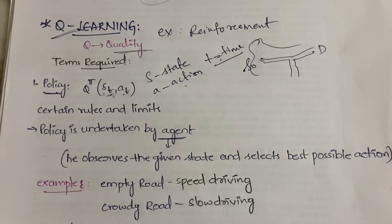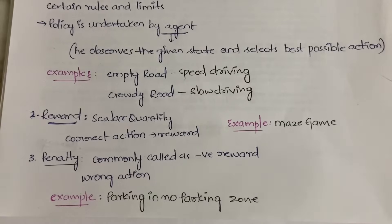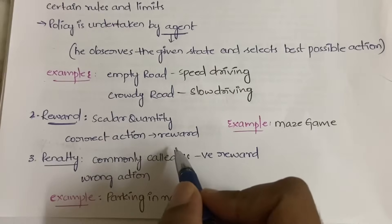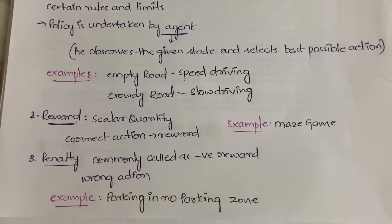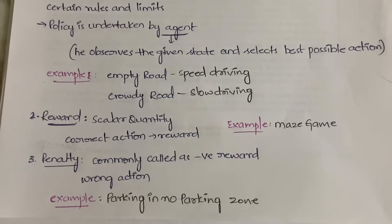The second term is reward. You get a reward whenever you do a correct action. For example, in the maze game, if you make a correct path instead of hitting a wall, you get a positive reward. If you hit the wall, that is a wrong action and you get a negative reward. Reward is a scalar quantity — only magnitude is measured.